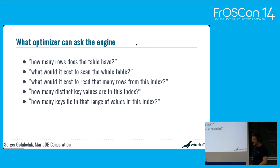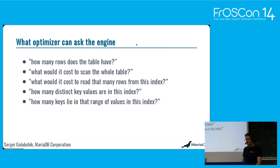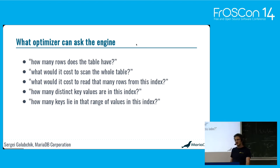The optimizer, when it needs some data, asks the engine. It can ask questions like: how big is the table? How many rows does the table have? Or what would it cost in abstract cost units to scan the whole table? Or maybe not the whole table, but to read a certain number of rows from a specific index? Or it might want to read the whole table but just wants to know how many distinct values are in the index.